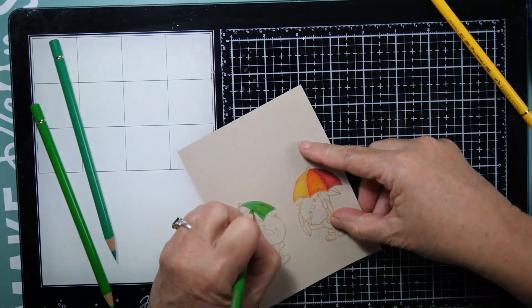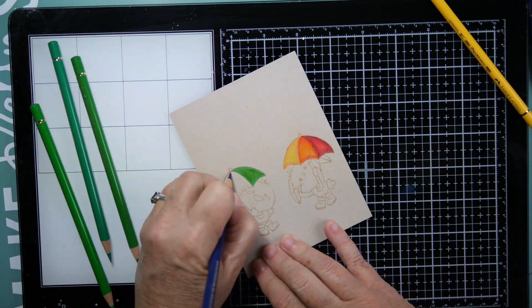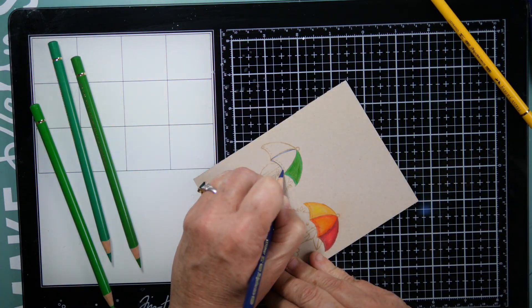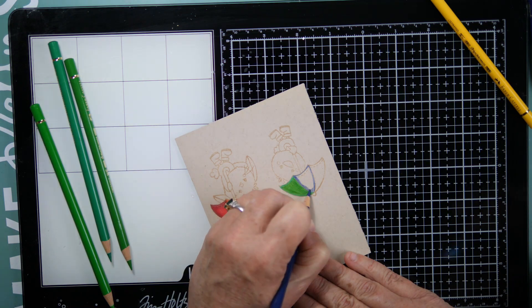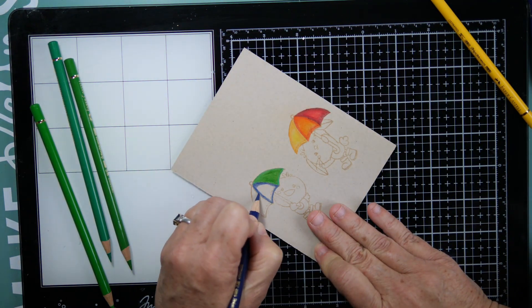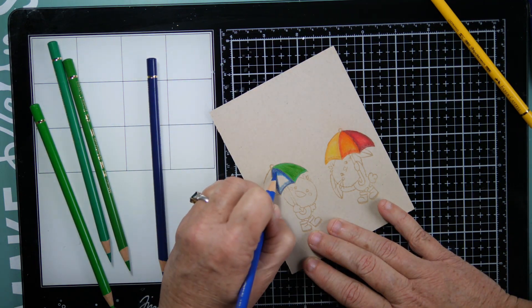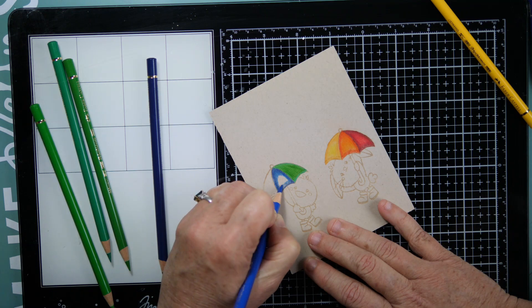She came out with four adorable stamp sets. I only purchased two of them right now. I started with the seasons that were in, so I got the Spring is in the Air and then she has a teacup one.